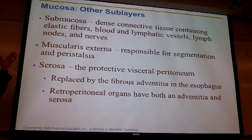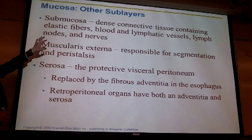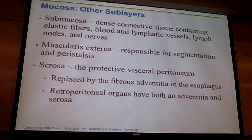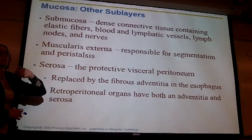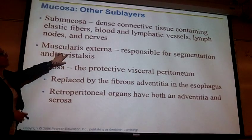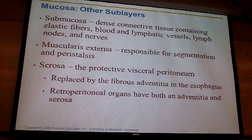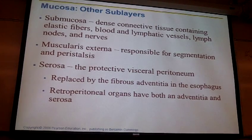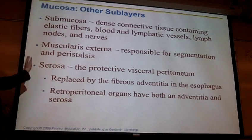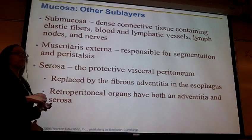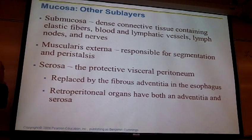The second tunic is the submucosa — dense connective tissue containing many blood vessels supplying the organ, lymphatic vessels, lymph nodes, and many nerves. The third tunic, the muscularis externa, is where you see layers of smooth muscle cells — at least two layers, sometimes three — and these are the smooth muscle cells that set up segmentation or peristalsis. The outermost tunic is the serosa, or if we're talking about an intraperitoneal organ, it's called the visceral peritoneum — just the connective tissue surrounding that organ.